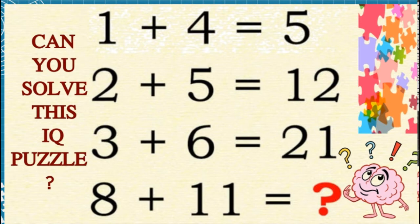Can you solve this simple IQ Math puzzle? We have 4 equations. 1 plus 4 equals 5. That's simple, right? 1 plus 4 is equal to 5 only.